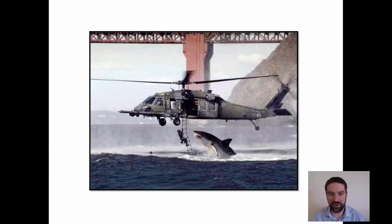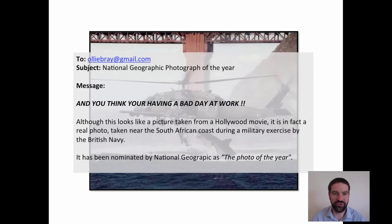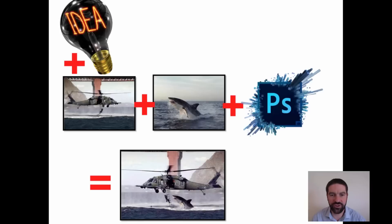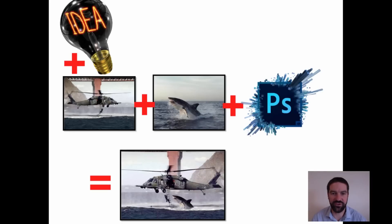I think what we'll do is start off with a little story. I don't know if you've seen this picture before — this is probably one of the first examples of online email spam. I was sent this picture probably a hundred times as a previous geography teacher, always associated with this message: 'National Geographic photograph of the year — and you think you're having a bad day at work.' Although this looks like a picture taken from a Hollywood movie, it is in fact a real photo taken near the South African coast during a military exercise by the British Navy, and it's been nominated by National Geographic as photo of the year. Of course, the interesting thing is that this photograph was a complete fake, but lots and lots of people believed it. It started off probably as just two pictures — a helicopter and a shark — a little bit of Photoshop, and then the person brought both pictures together as one.